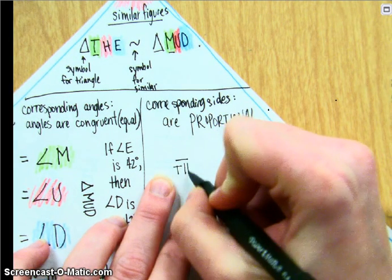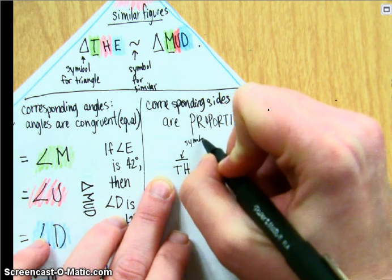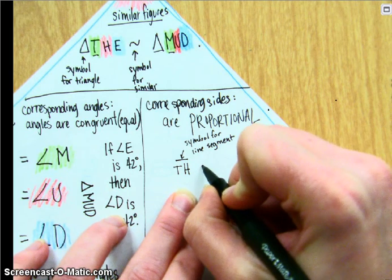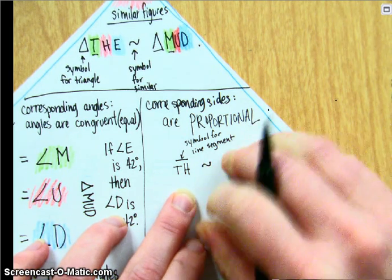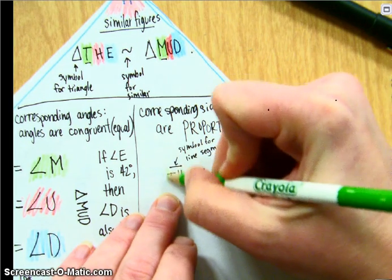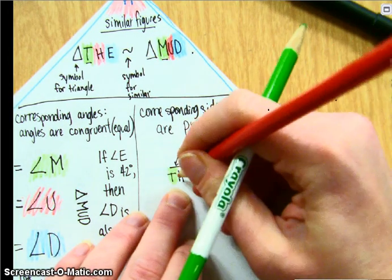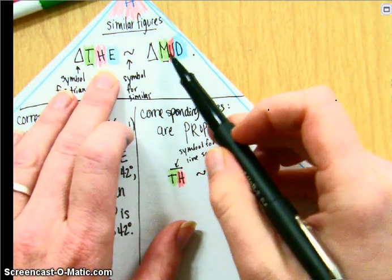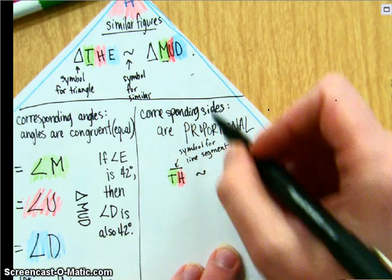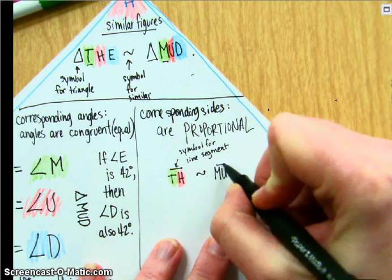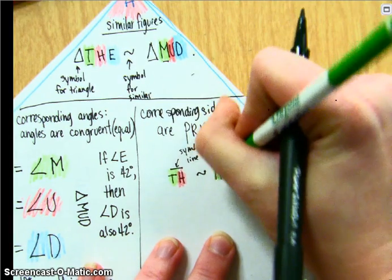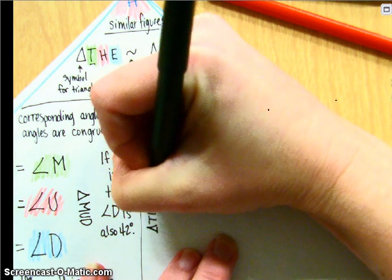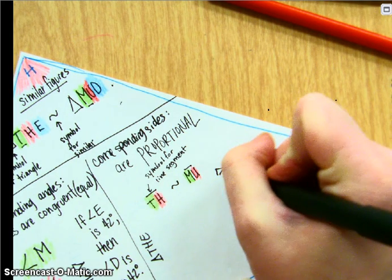So line segment TH, and this is the symbol for line segment. Would be similar to, if you look at, T is the green one, H is the red one. So if you look back at your similarity statement, green to red, green to red, first place to second place would be MU line segment. And again, all of these line segments will be from triangle THE. And all of these over here will be from triangle MUD.